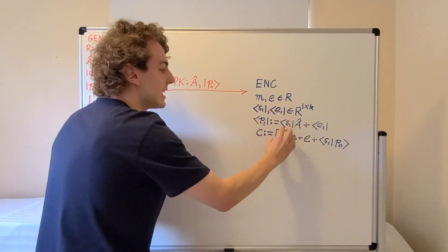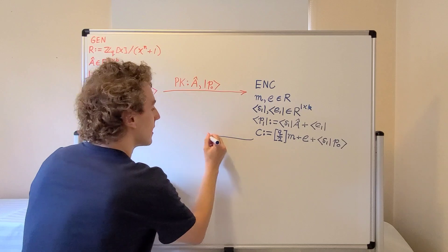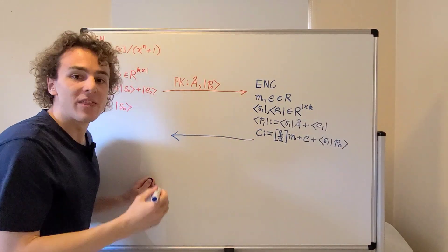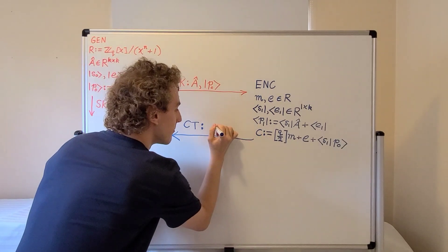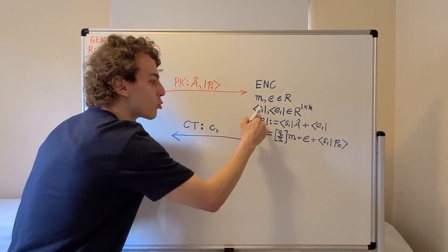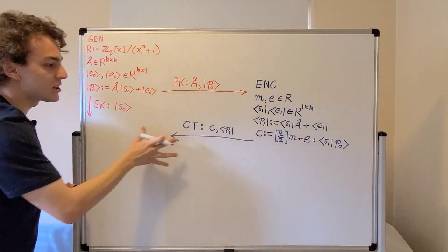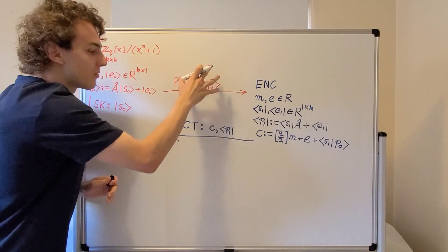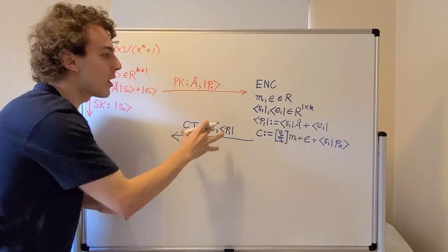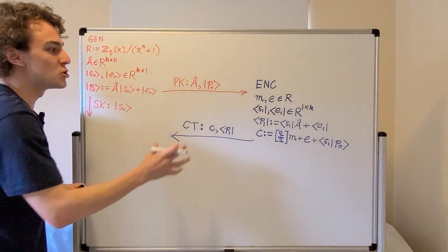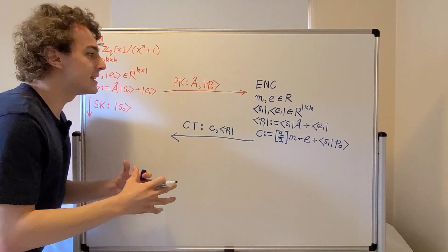We have constructed these two values, and now we're going to send them through the public channel. This forms the ciphertext CT, which includes the value C and the public row vector P1. All information broadcast through this public channel is available to adversaries, who can attempt cryptanalysis. However, it is very computationally difficult to turn this public key into the secret key, and that assumption of computational hardness underpins this cryptosystem.